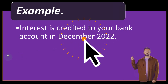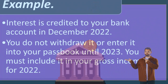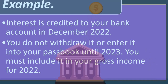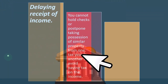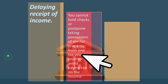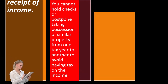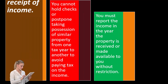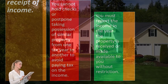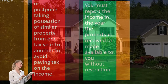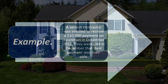Example: interest is credited to your bank account in December 2022. You do not withdraw it or enter it in your passbook until 2023. You must include it in your gross income for 2022 because you have the capacity to access it. You cannot hold checks or postpone taking possession of similar property from one tax year to another to avoid paying tax. You must report the income in the year the property is received or made available to you without restriction.